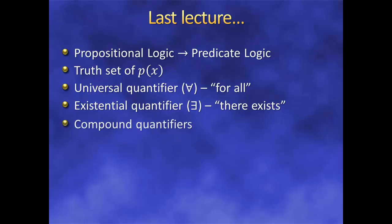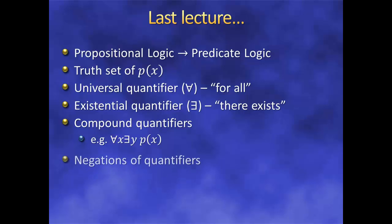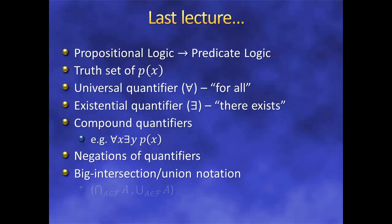We saw how to string quantifiers together to make complex statements, but remember we have to be careful of the order in which we put them. We figured out how to negate quantifiers by moving the negation inside and swapping the universal and existential quantifiers. We used these quantifiers to extend our definitions of intersection and union, introducing big intersection and big union notation.